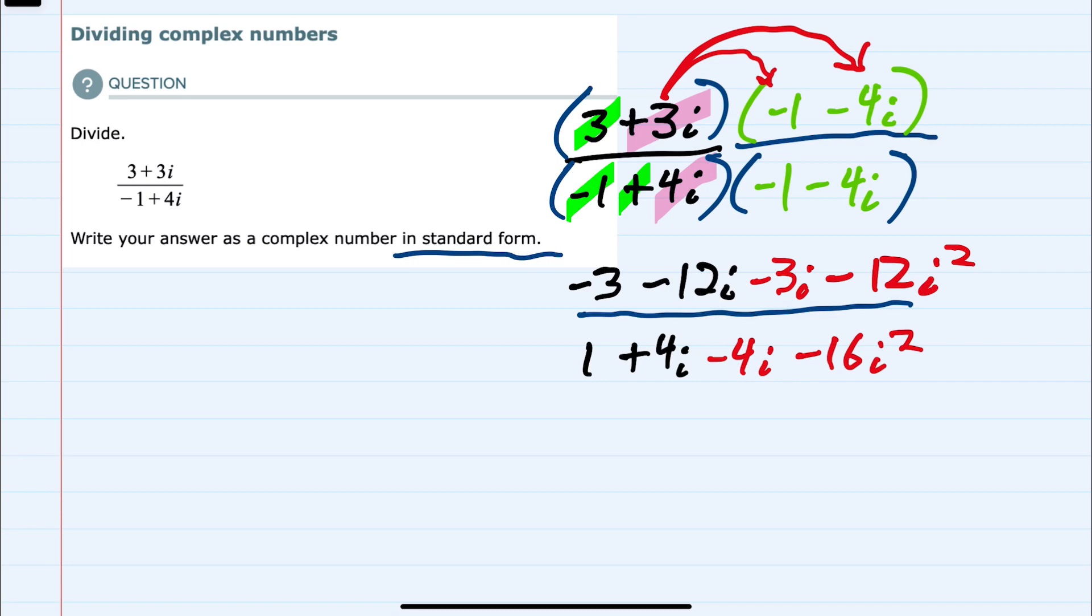From here, we can simplify the numerator and the denominator by first recognizing that i squared is negative 1. So this i squared is negative 1, and this i squared is negative 1. So in the top, I'll just rewrite as minus 3 minus 12i. And then minus 3i, this will now be a plus 12.